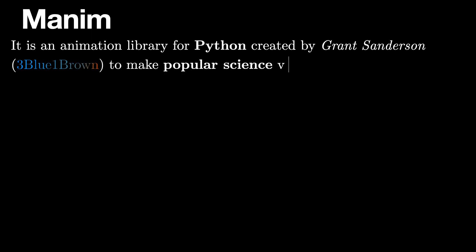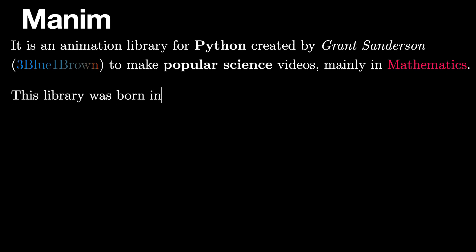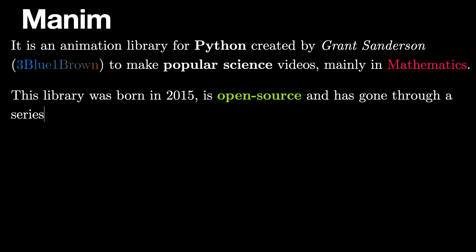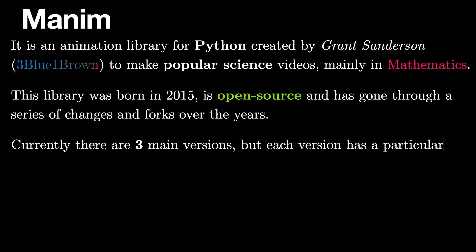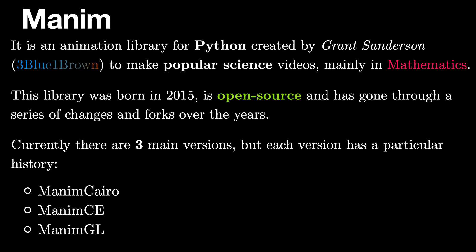Manim is an animation library for Python created by Grant Sanderson to make popular science videos, mainly in mathematics. This library was born in 2015, is open source and has gone through a series of changes and forks over the years. Currently there are three main versions: Manim Cairo, Manim CE, and Manim GL.